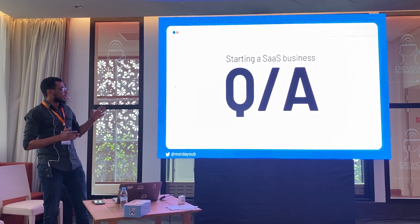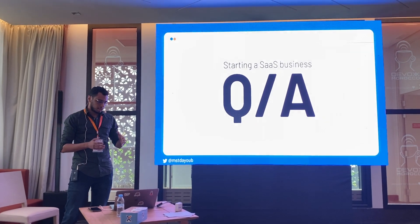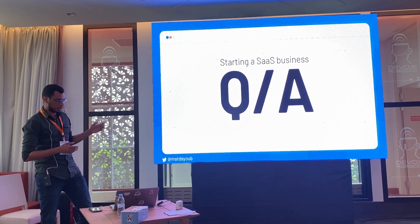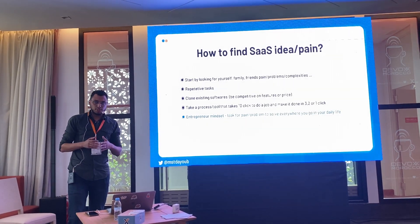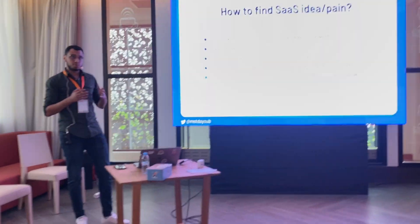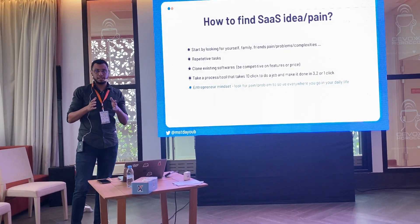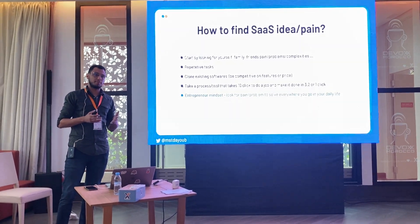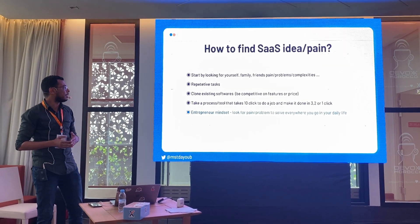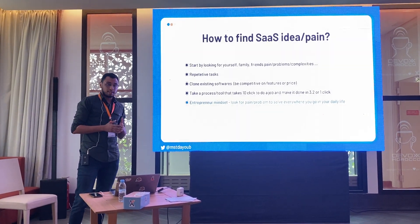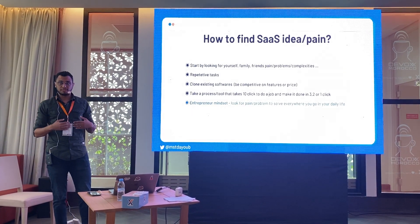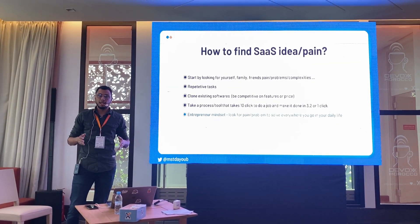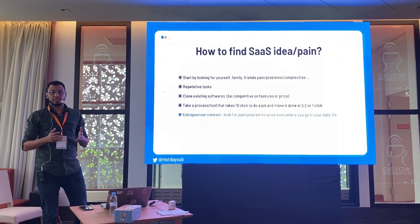To be clear on how to start a SaaS business model, we'll go through a question-and-answer format. The first question: how to find a SaaS idea — or as I call it, a pain or problem, because ideas are everywhere. What matters is whether there is a problem or a pain. We can start by looking at our own problems, our family's problems, our friends' pains and complexities. The best problem we can solve is our own problem, because being an expert in a problem is already a benefit.